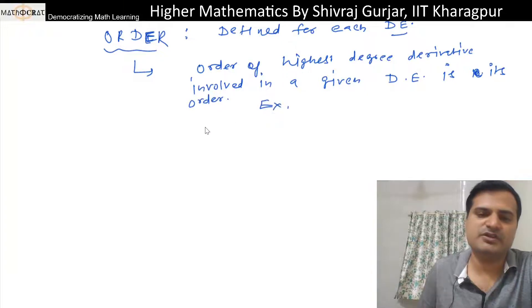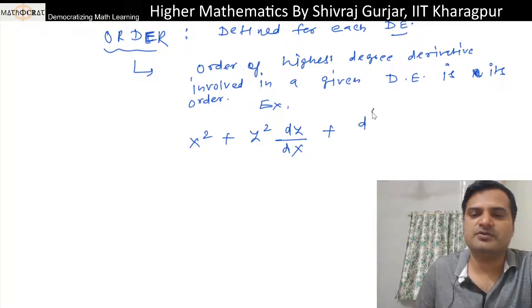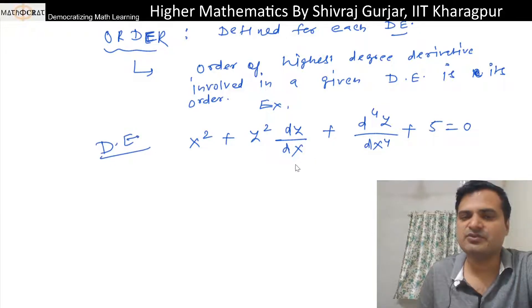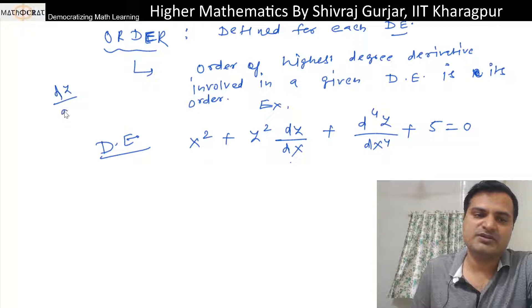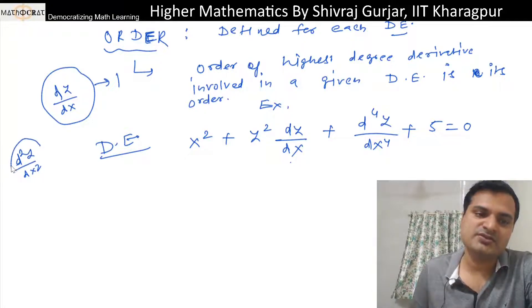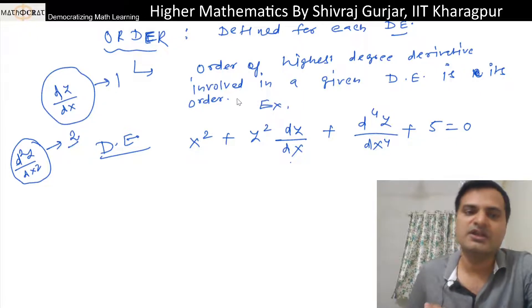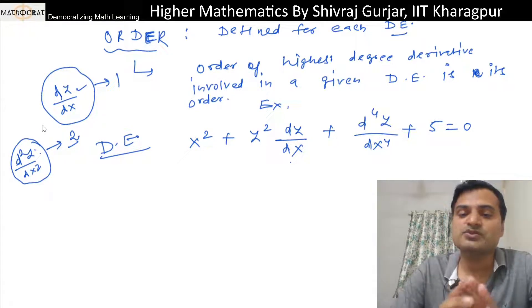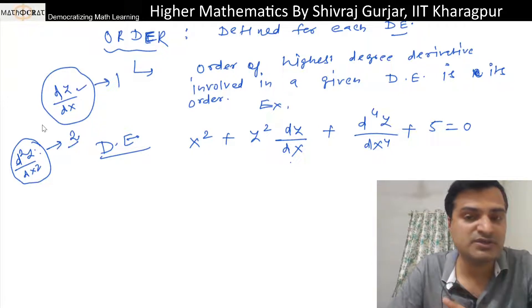For example, consider: (x² + y²)(dy/dx) + d⁴y/dx⁴ + 5 = 0. This is a differential equation because it involves differential operators and variables x and y. Here dy/dx is a differential operator of order 1, and d²y/dx² means differentiating y with respect to x twice, so it is of order 2.